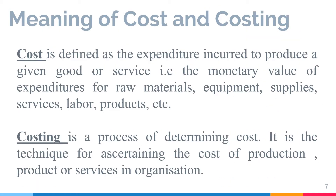Now let's understand the meaning of cost and costing. Cost means any expenditure incurred to produce goods or render services — it is the monetary value of expenditures on raw materials, equipment, supplies, services, labor, and products. Costing is the process to determine this cost — the technique involved to calculate the cost of production for products or services in the organization. So cost means the expenditure, and costing means the process to determine that expenditure.